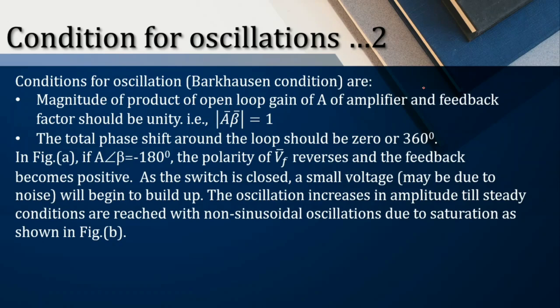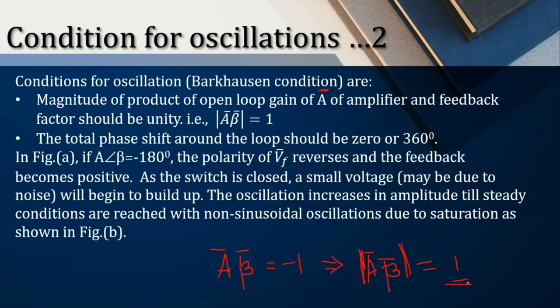The same thing is stated here: the magnitude of the product of the open-loop gain Ā of the amplifier and the feedback factor β̄ should be equal to unity. To clarify: Ā × β̄ = −1 when written with sign, but |Ā × β̄| = 1 when written as modulus. Whether positive or negative, the magnitude is taken as the positive value. The feedback factor should be equal to unity — that is what we have discussed.